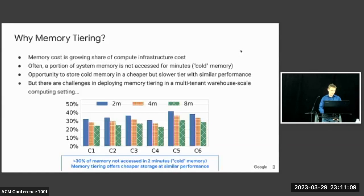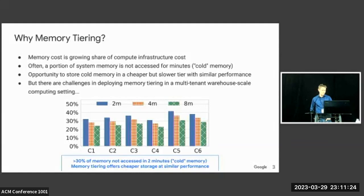Why are we interested in memory tiering? You can just look at the agenda for the session to see that hyperscalers are interested in reducing memory spend, which is often becoming more than 50% of compute infrastructure cost. Memory tiering relies on the observation that some memory in data center applications is colder than others — cold meaning infrequently accessed. Google has between 30 and 40% of cold memory in its clusters.